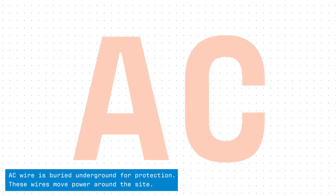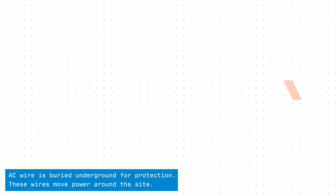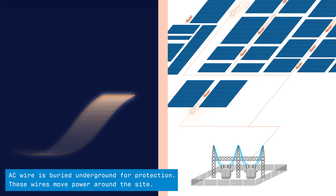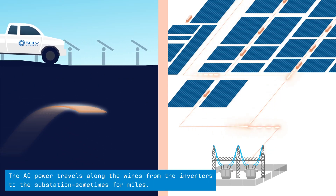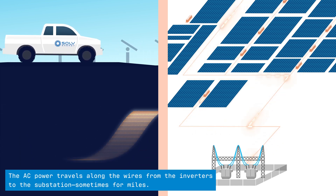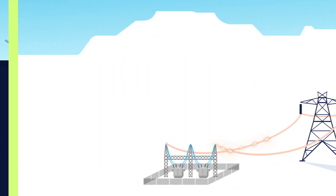AC wire is buried underground for protection. These wires move power around the site. The AC power travels along the wires from the inverters to the substation, sometimes for miles.